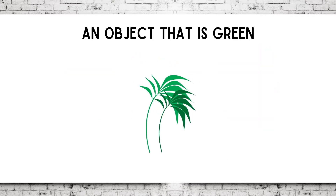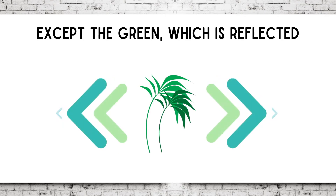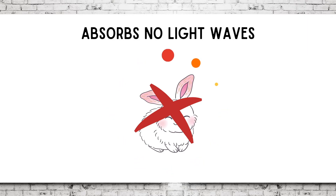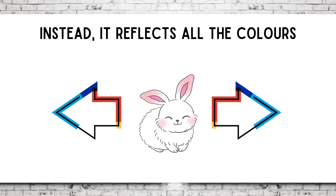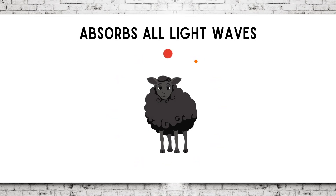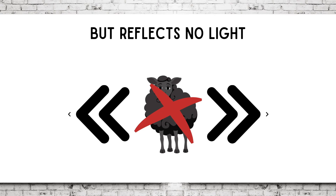An object that is green absorbs all other colored light waves, except the green, which is reflected. An object that is white absorbs no light waves — instead, it reflects all the colors. This is because white light is a combination of all other colored light waves. So, in order for this bunny to appear white, all colored light waves must be reflected back to the eye. An object that is black absorbs all light waves but reflects no light. When there is an absence of light, or no light is being reflected to the eye, objects appear black.